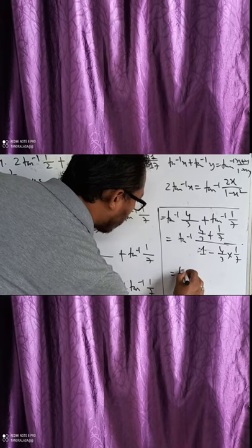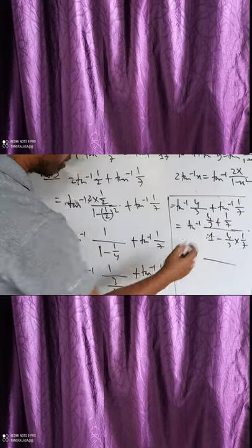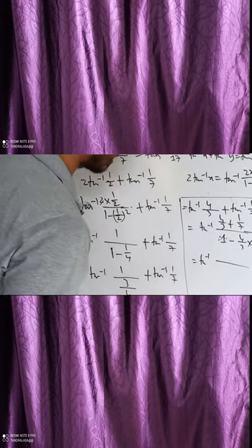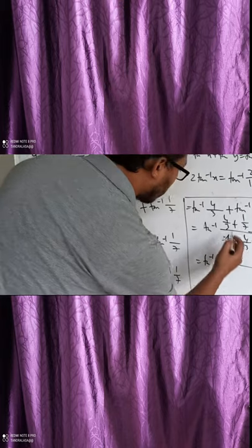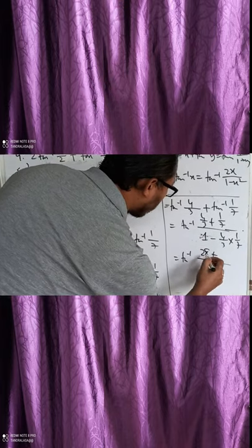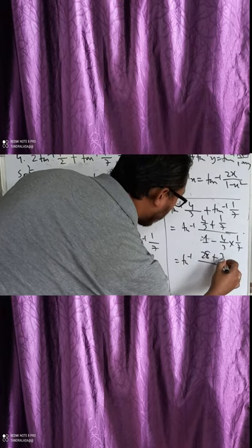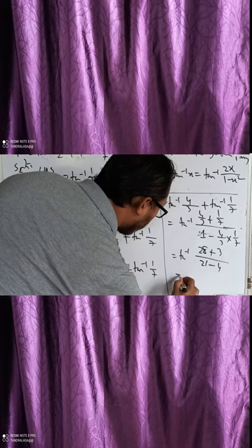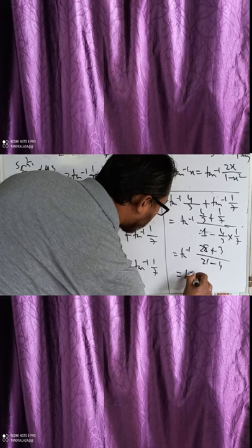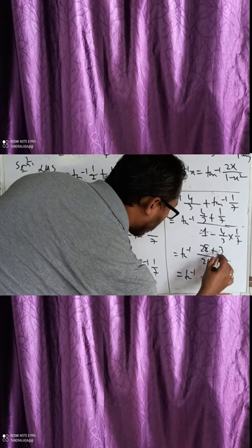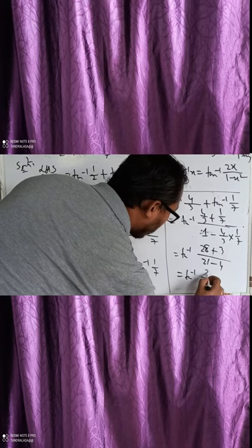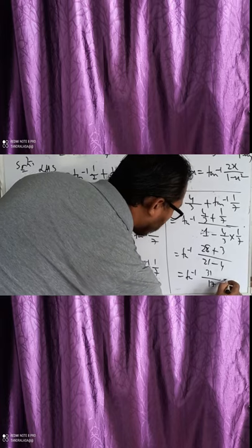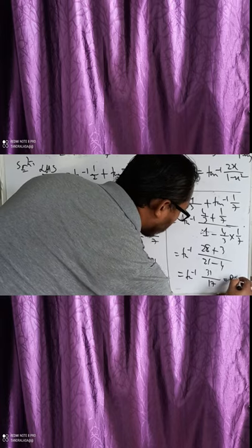So we get tan⁻¹ of (4/3 plus 1/7) divided by (1 minus 4/3 into 1/7). Taking LCM as 21, numerator becomes 28 plus 3, and denominator becomes 21 minus 4. That gives tan⁻¹(31/17), which equals the right hand side. Hence proved.